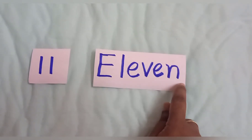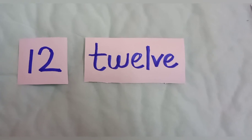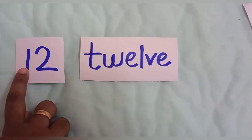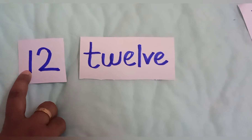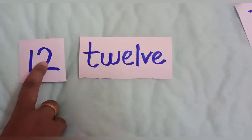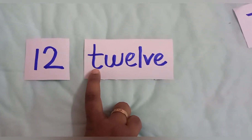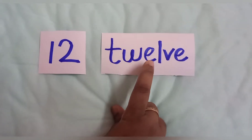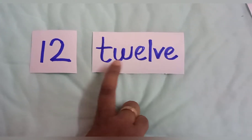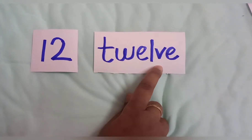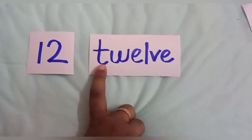Now let's see what is the spelling of 12. We write 12 as 1 and then 2. The spelling is T-W-E-L-V-E — twelve. Once again, can you all repeat with me?